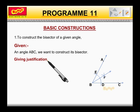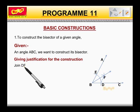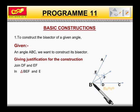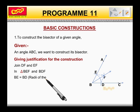Now, giving justification for the construction. Join DF and EF. In triangle BEF and BDF, BE is equal to BD, radii of the same arc.